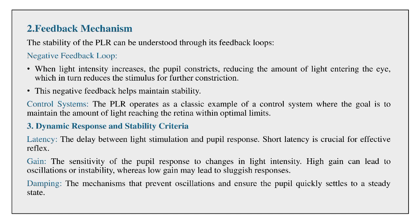Feedback mechanism: The stability of the PLR can be understood through its feedback loops. In the negative feedback loop, when light intensity increases, the pupil constricts, reducing the amount of light entering the eye, which in turn reduces the stimulus for further constriction. This negative feedback helps maintain stability. The PLR operates as a classic control system where the goal is to maintain the amount of light reaching the retina within optimal limits.